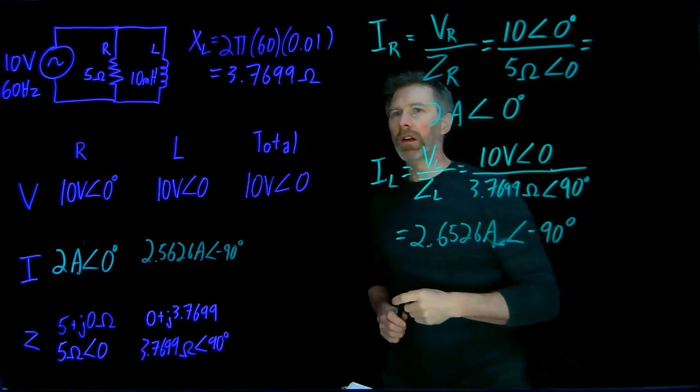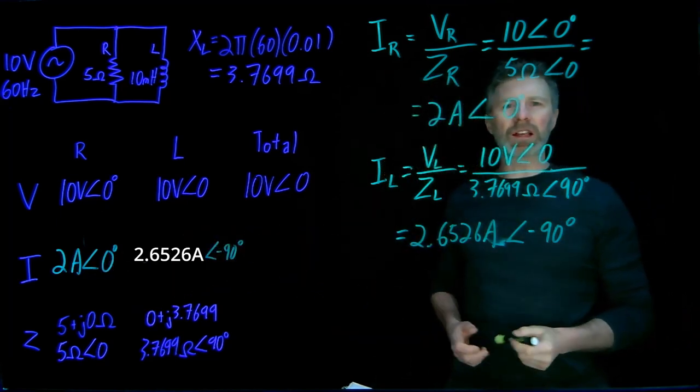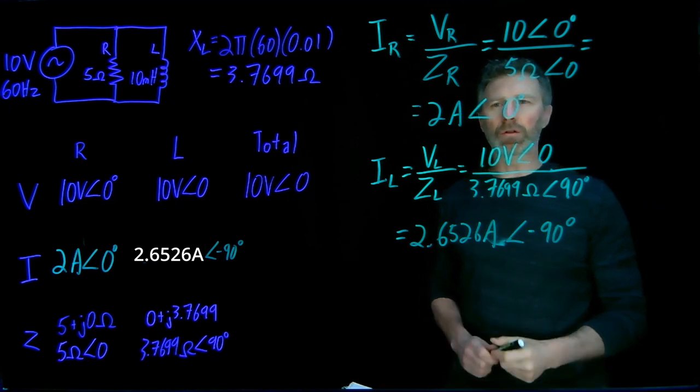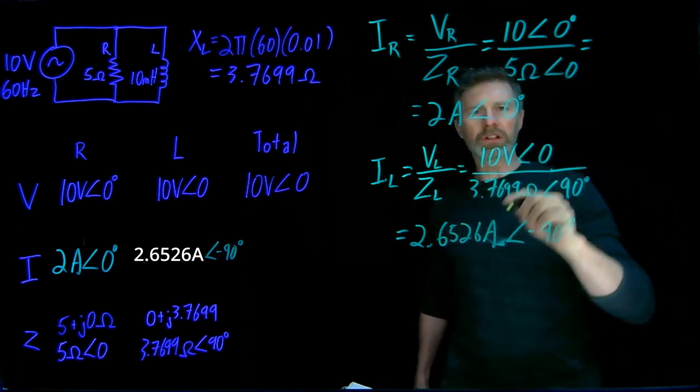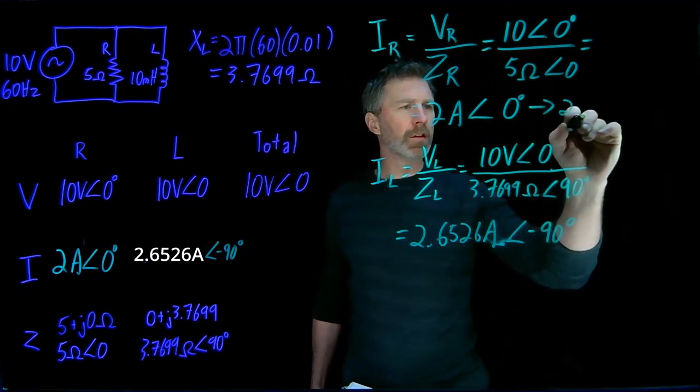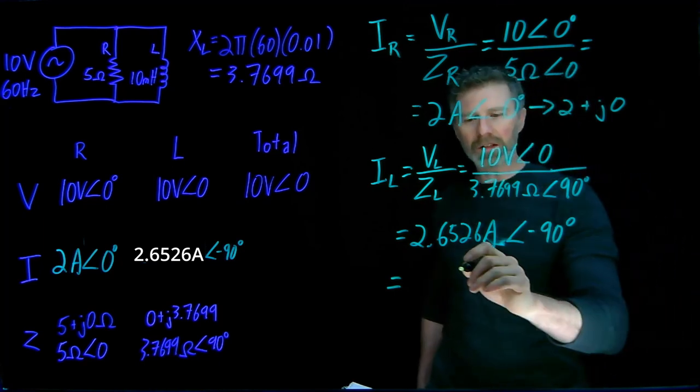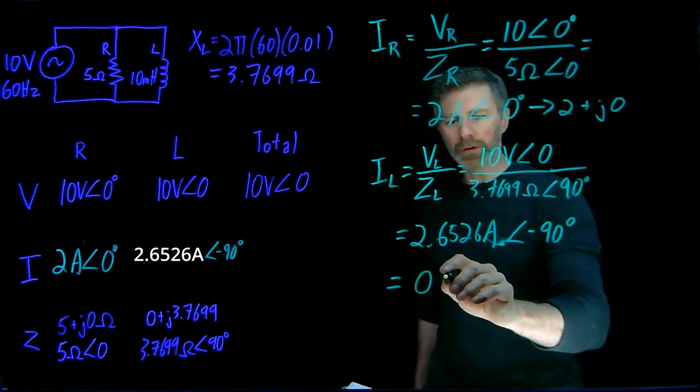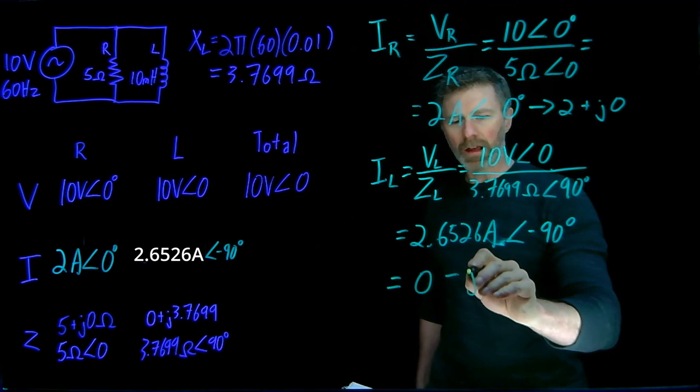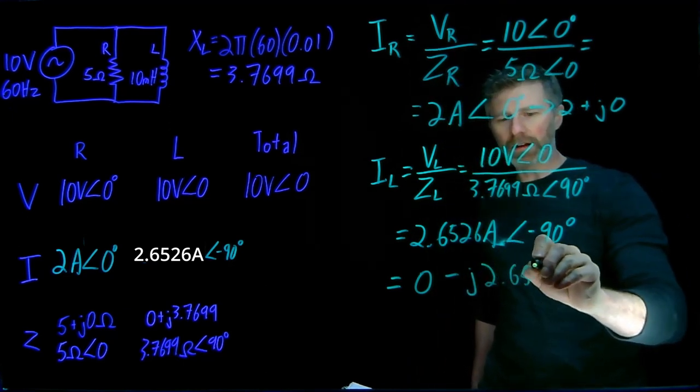Now to get the total current, I can add these two currents, and the easiest way to add them is if they are in rectangular form. So I need to convert these two currents into rectangular form. The resistor current is really easy - that's simply 2 plus j0. The current through the inductor is also easy - there's no real component and the imaginary component is negative 2.6526.